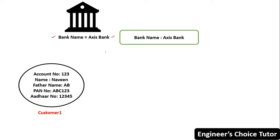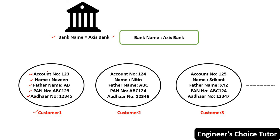For example, for customer one: account number is 123, name is Naveen, father name is AB, PAN number is ABC123, and Aadhaar number is 12345. The attributes — account number, name, father name, PAN number, and Aadhaar number — can have different values for different customers. For customer two: account number is 124, name is Nithin, father name is ABC, PAN number is ABC124, and Aadhaar number is 12346.